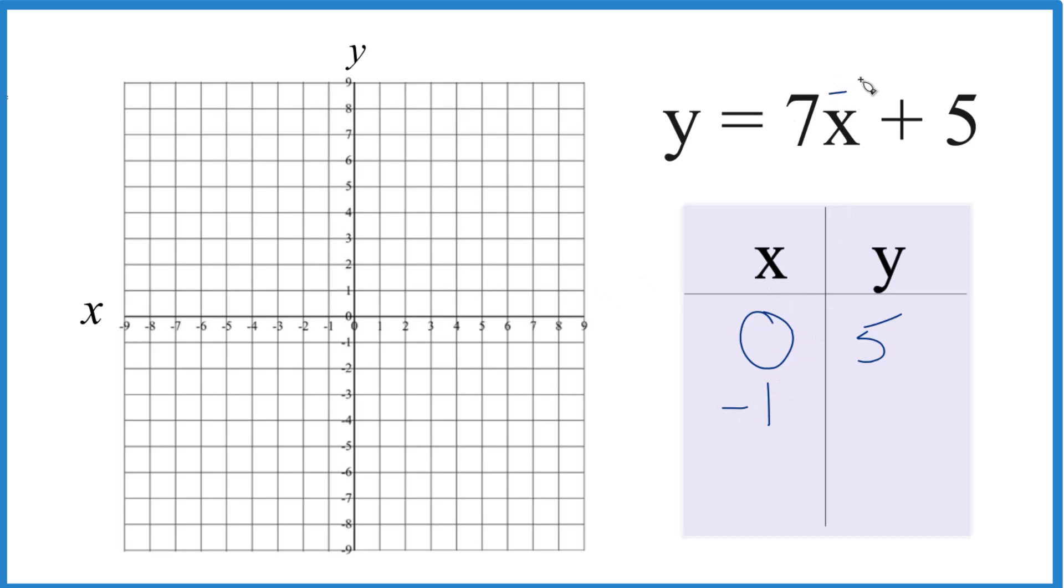7 times negative 1, that's negative 7. Negative 7 plus 5, that gives us negative 2. That fits.